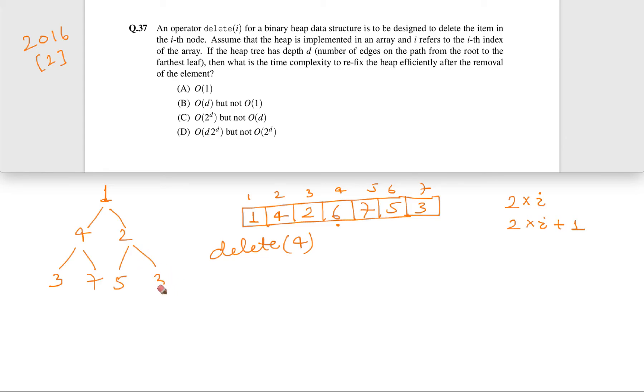And correspondingly what will happen in the array? This 3 will be deleted. And 3 will be put here at the place of 6. So this is the new array as per the new heap. But you know that this is not a heap. So when we placed 3 here, then this now violates the property of min heap.